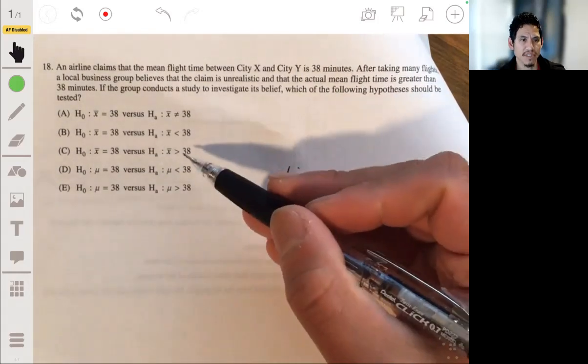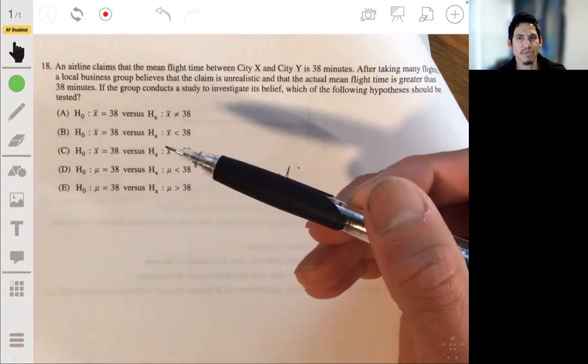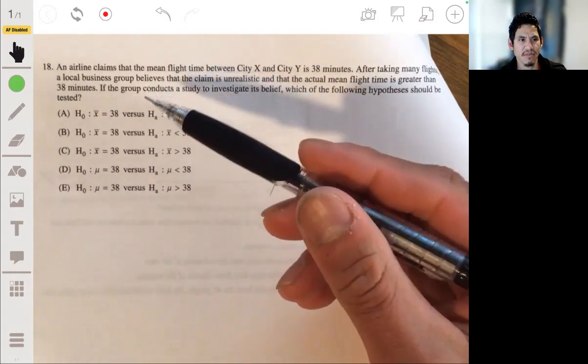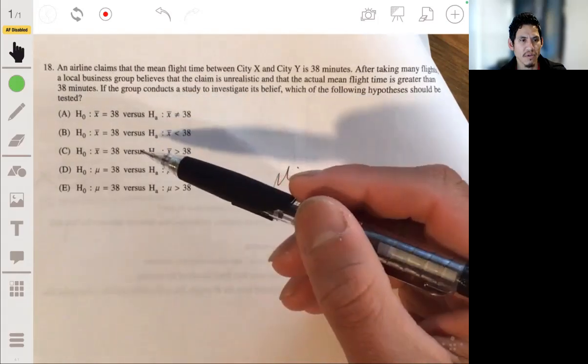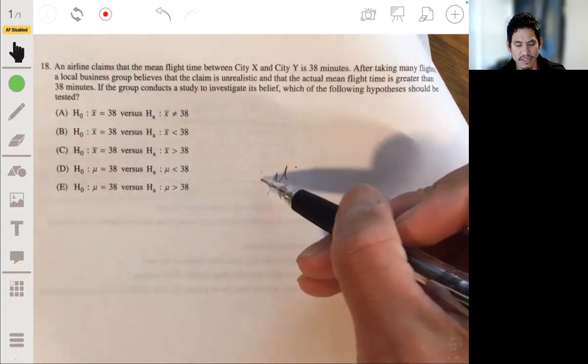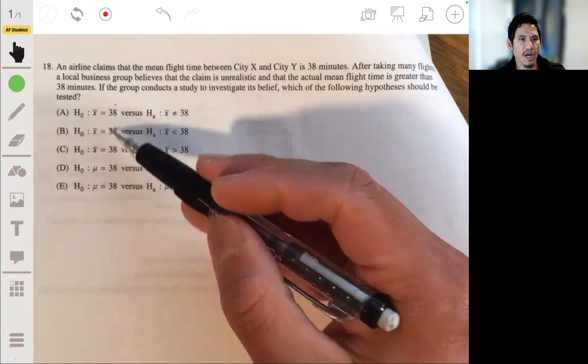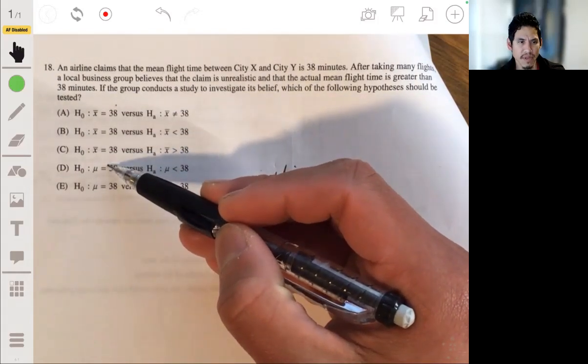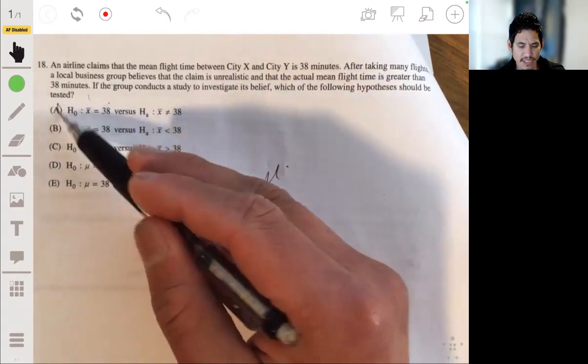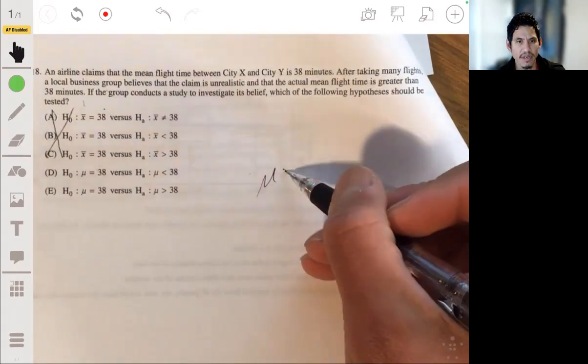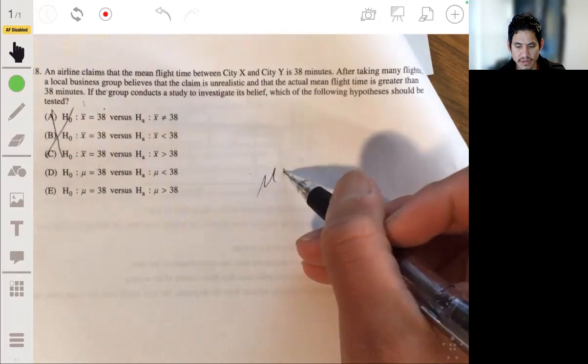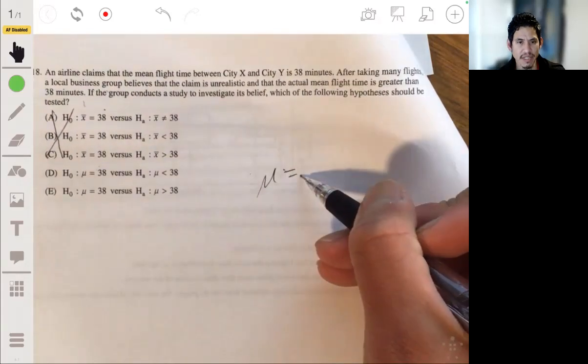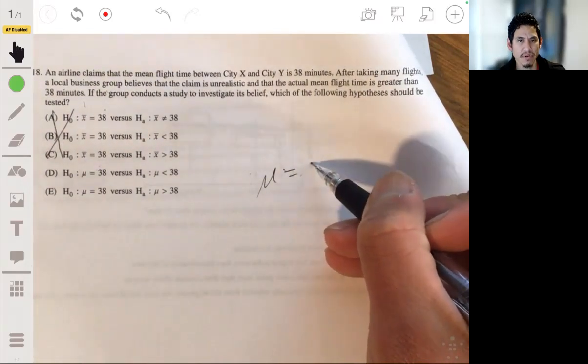So the null hypothesis, remember, is that there's no difference. And we're always talking about population parameter, not sample. The sample we can always prove because we get all the data from the sample. So right off the bat, the hypothesis test has to be dealing with the population, not the sample. So it's not going to be A, B, or C. So they're claiming that the true mean, or mu, is 38.